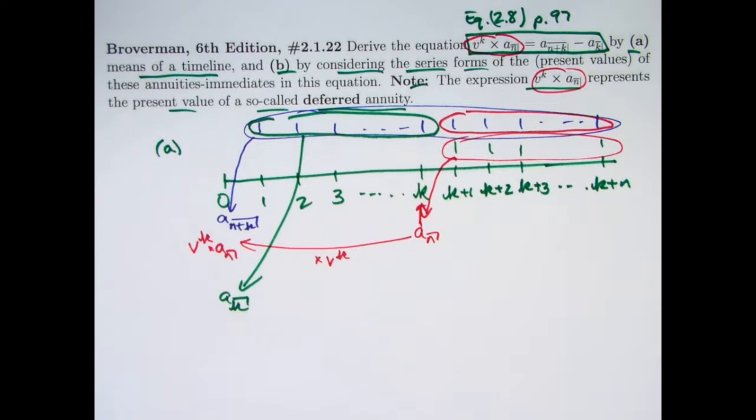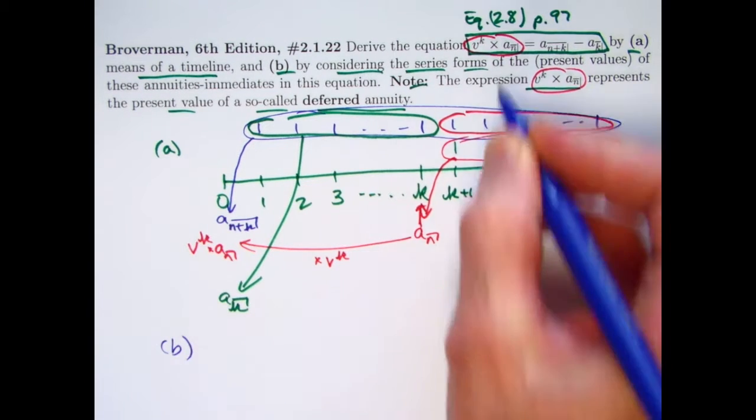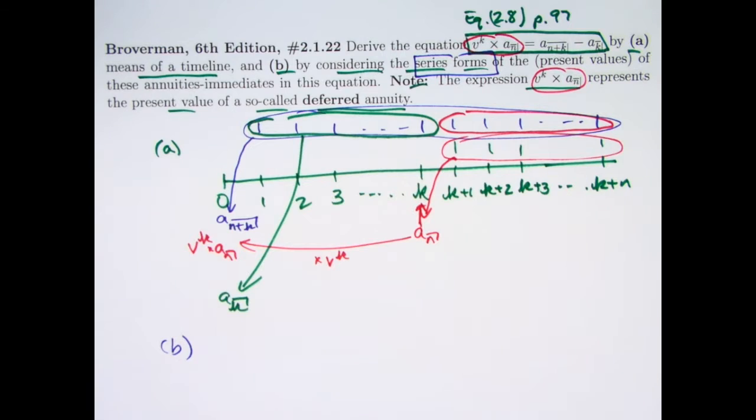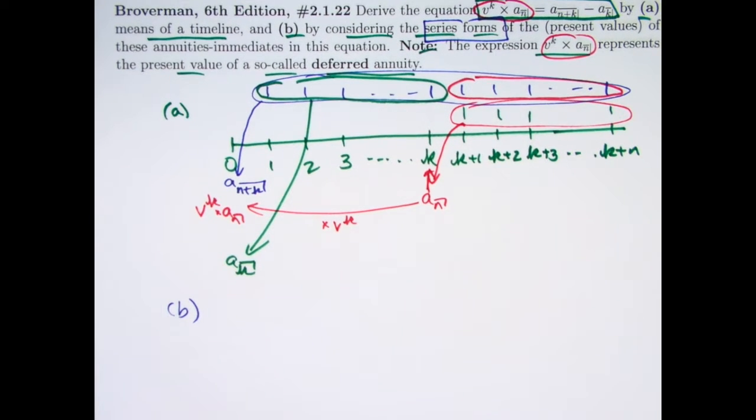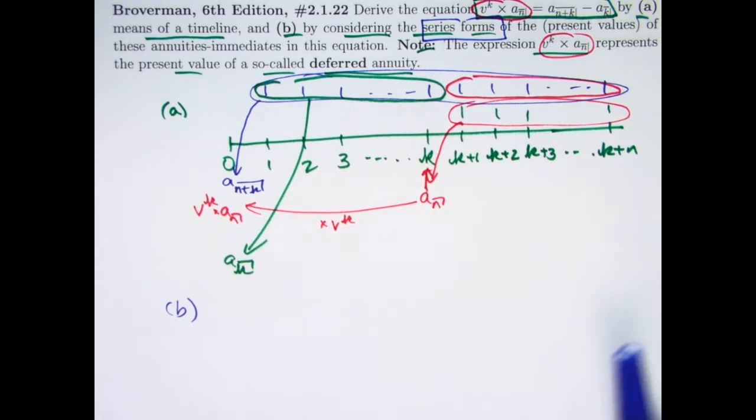That's not really a proof, but it's an intuitive approach that actuaries use all the time and it is valid. If we approach it with series forms in part B, that would be more of a proof.